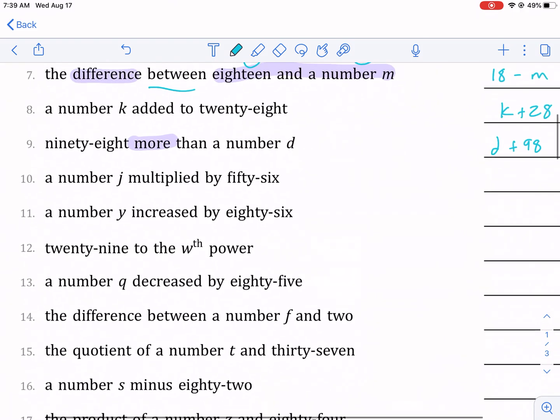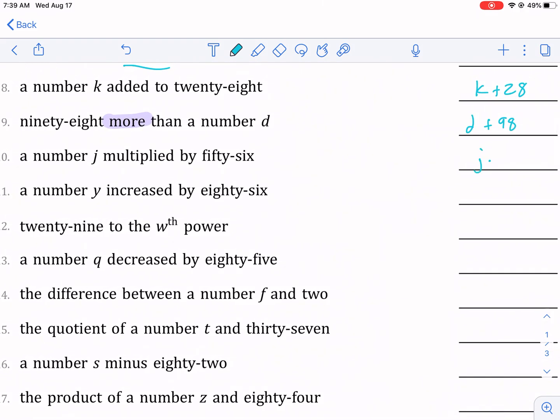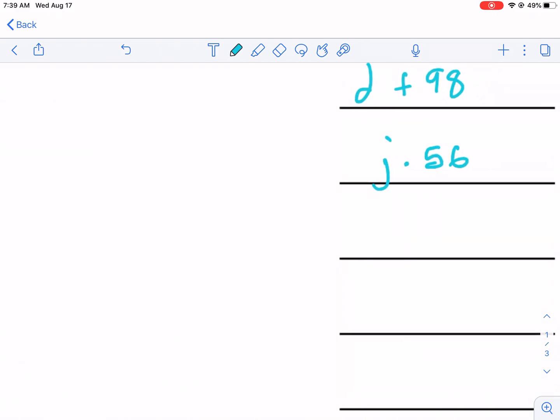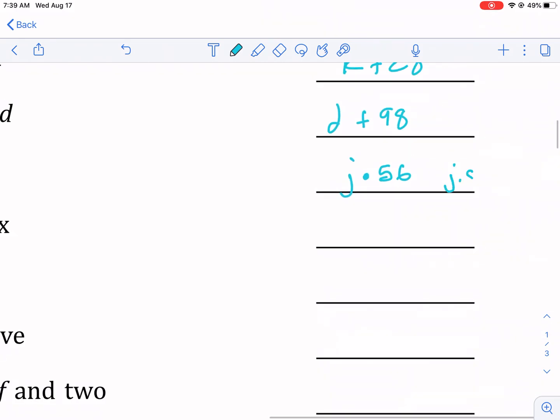A number j multiplied by 56—j times 56. I prefer the dot for multiplication. Just be careful that you don't put it like as a decimal place—you don't want it like that. Make sure it's very clear that it's kind of like in the middle, not at the bottom.